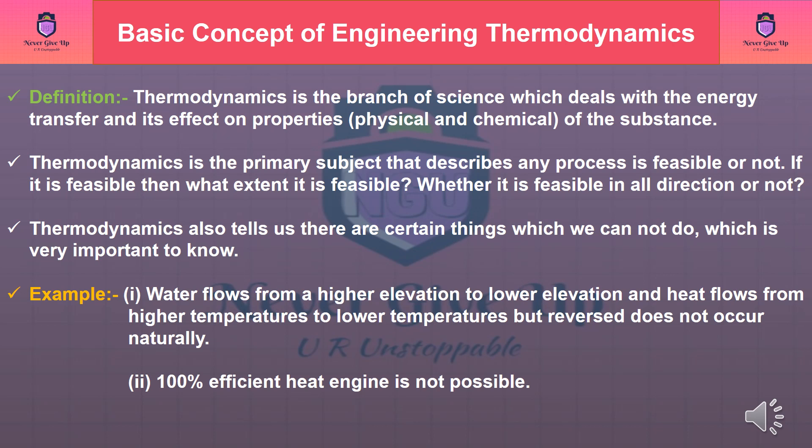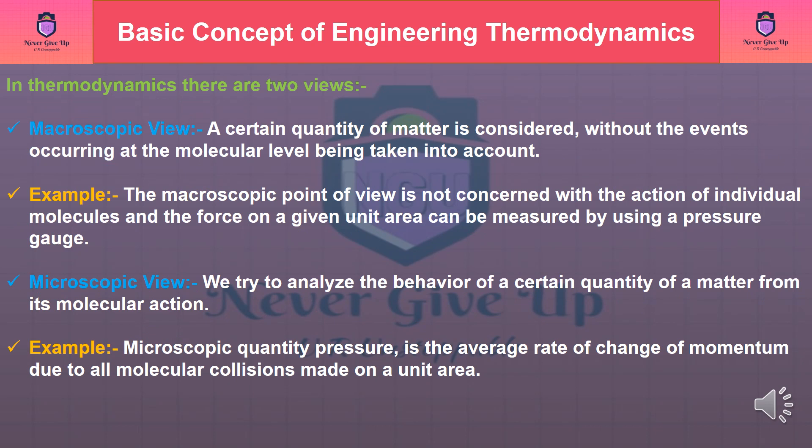Example: Water flows from a higher elevation to lower elevation, and heat flows from higher temperatures to lower temperatures, but the reverse does not occur naturally. A 100% efficient heat engine is not possible. In thermodynamics, there are two views.